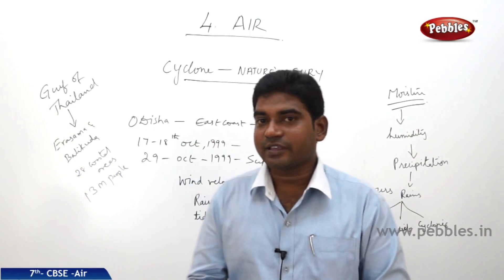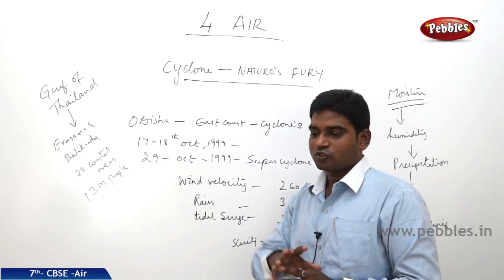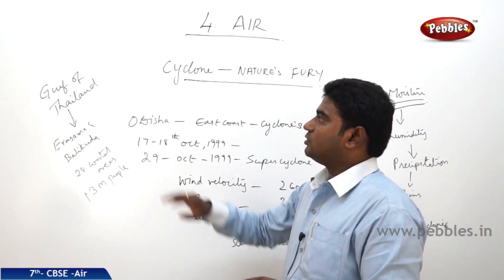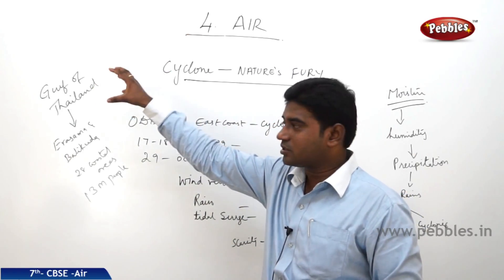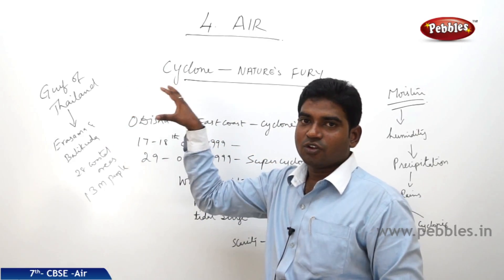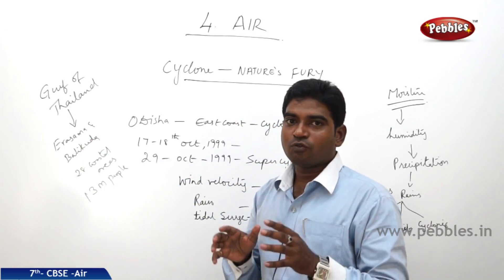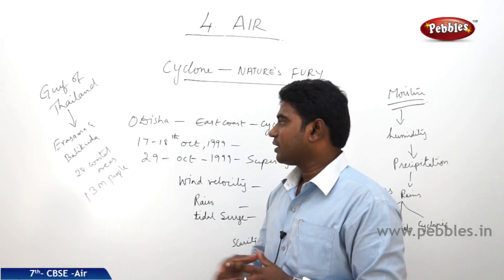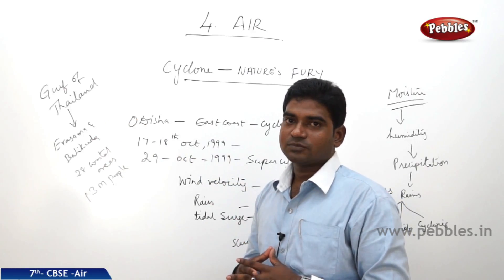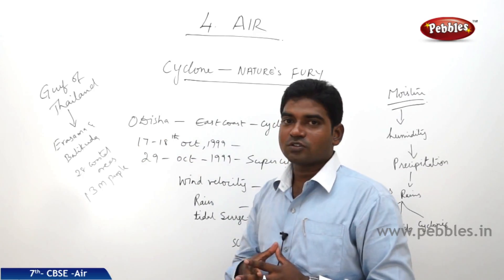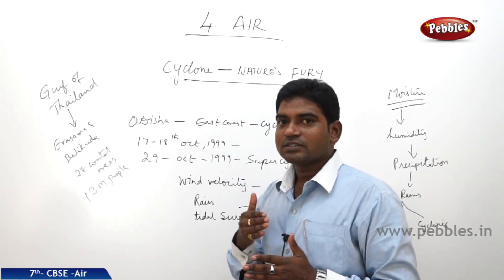From where did this cyclone start? As Orissa is located on the eastern coast of India, the Bay of Bengal influence can be seen. The initial depression was caused in the Gulf of Thailand, which moved towards the north-eastern part and reached the Orissa region, where 28 coastal areas felt the impact and 13 million people suffered due to this cyclone.